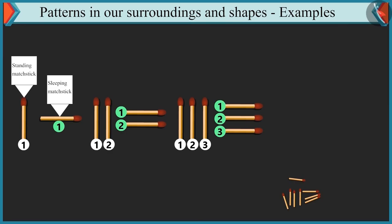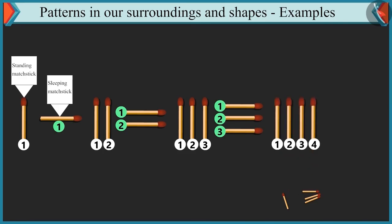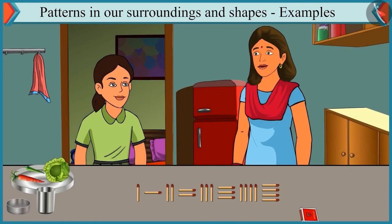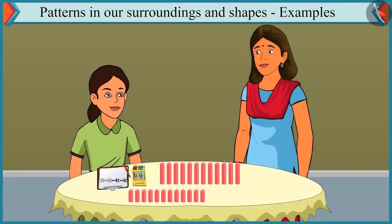Now, how will you move ahead with this pattern? We will move ahead by placing four-four matchsticks, which means four standing matchsticks and four sleeping matchsticks. Well done, Chutki. You completed this pattern in a perfect manner. Come on, now let's look at the next pattern.